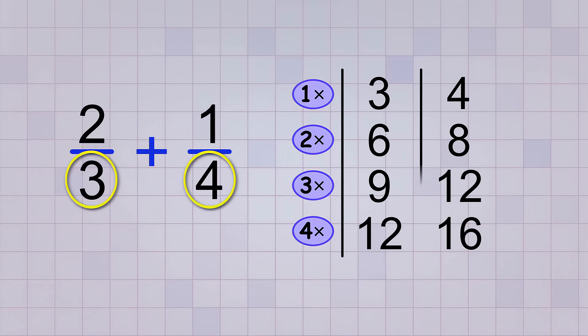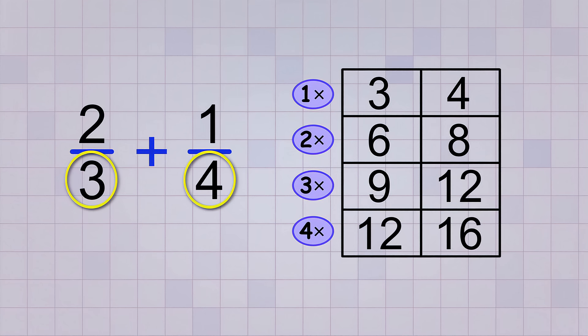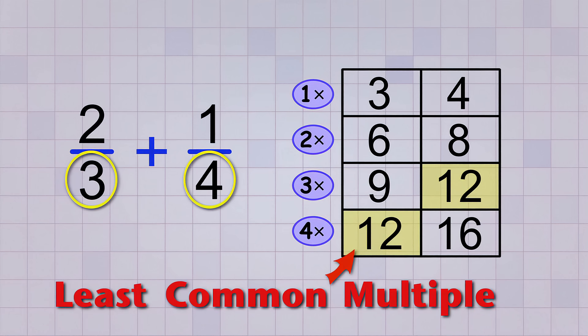It helps to arrange these multiples in a small table, almost like a scoreboard, so that you can keep things organized and easy to find. We'll stop making multiples as soon as we find an answer that's the same for both numbers. That answer is called the least common multiple, and it will become our new common denominator.